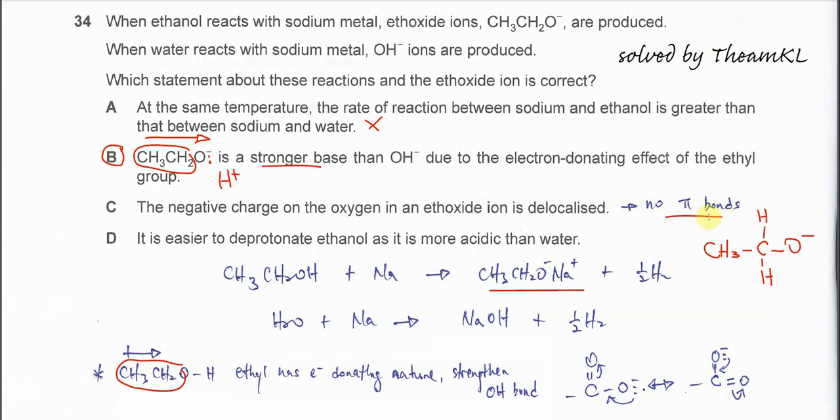When there are no pi bonds, it's quite difficult or actually impossible for delocalization to happen. I'll give you one example. For the carboxylate ion, we have COO-. The lone pair on the oxygen can easily delocalize because of the pi bond. When this lone pair moves here, when it forms the bonding, then the pi bond here will break and the pair of electrons will move to the oxygen here.